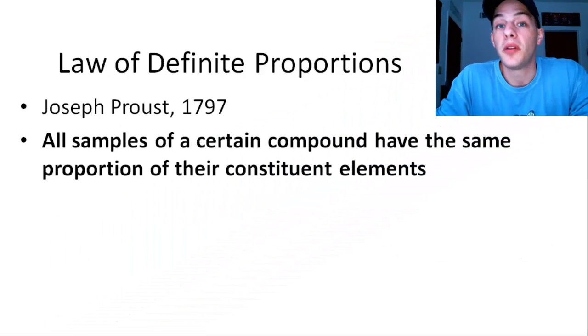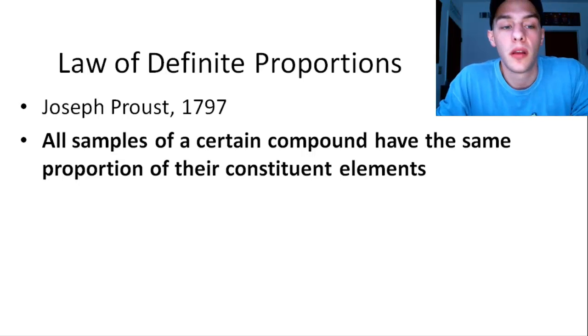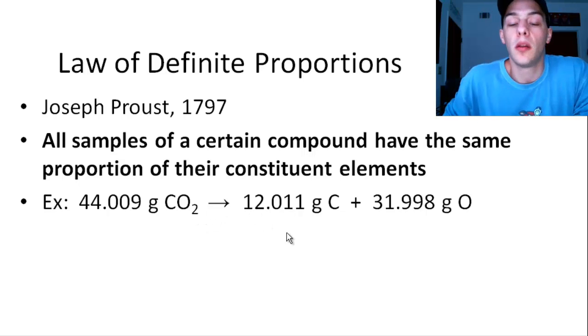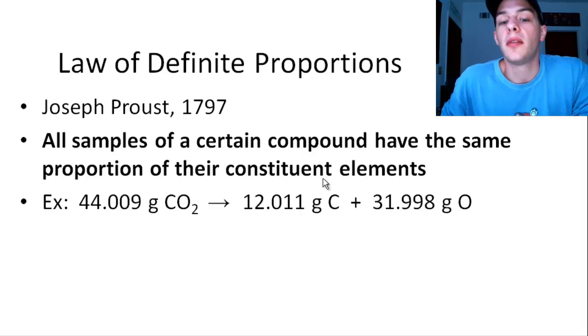So now let's get into the Law of Definite Proportions. And this was proposed a little less than a decade later after the conservation of mass. And this was proposed by Joseph Proust. And it says that all samples of a certain compound have the same proportion of their constituent elements. So what does this mean? Well, if I have a 44.009 gram sample of CO2, carbon dioxide, and I analyze and I break it up into its constituent elements, carbon and oxygen. And if I take the masses of those elements, then I will get 12.001 grams of carbon and 31.998 grams of oxygen.